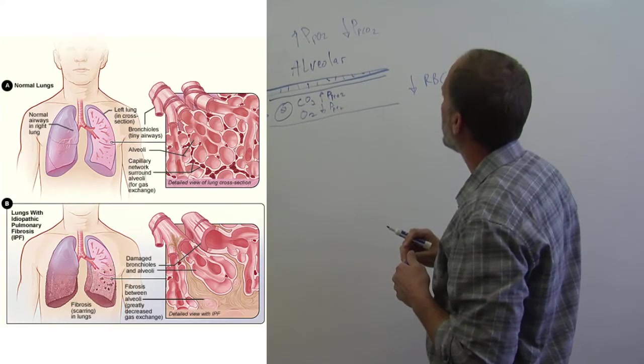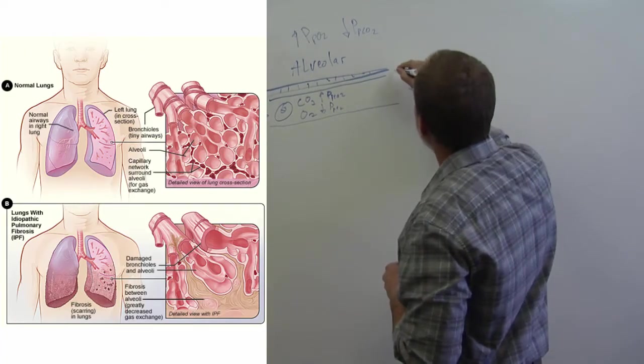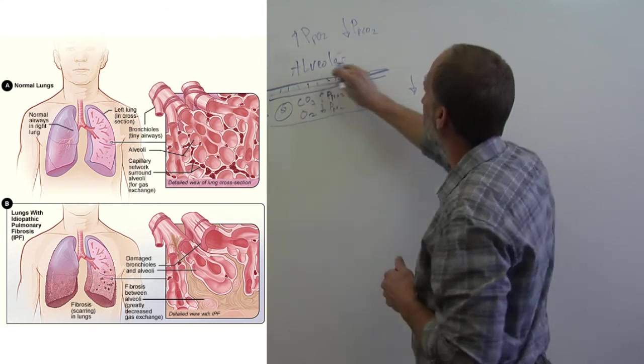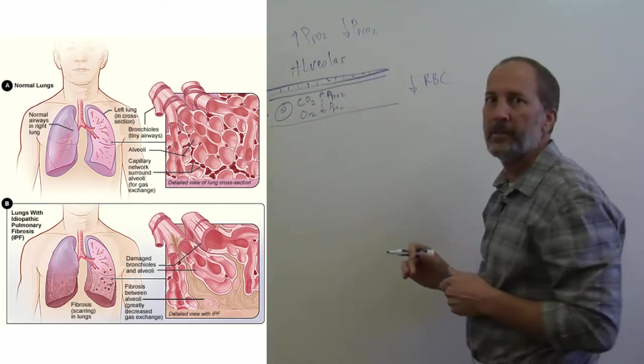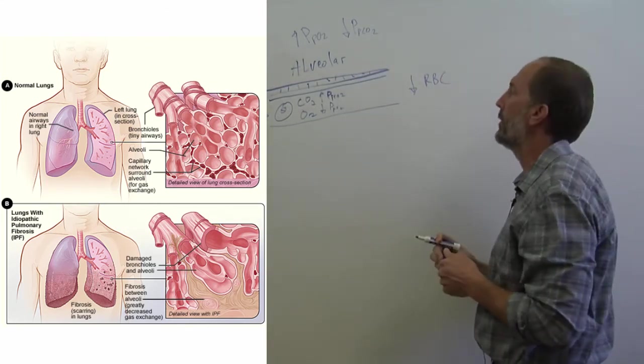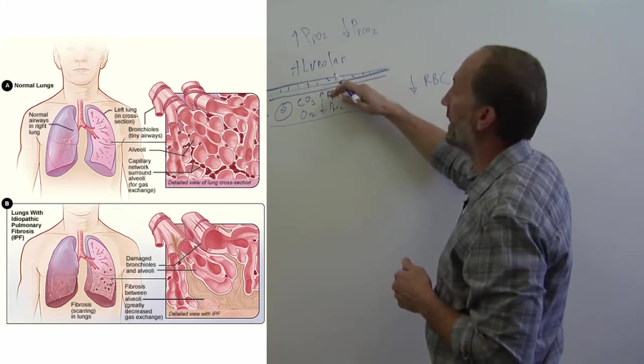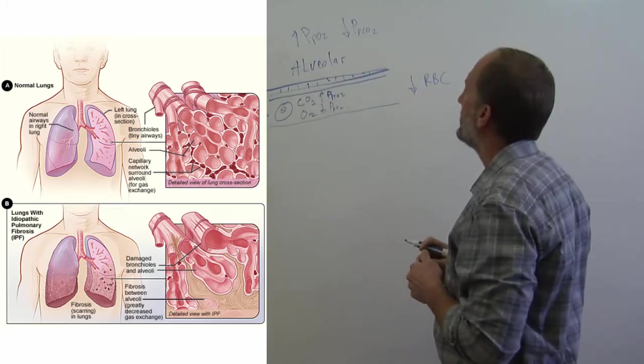Another thing that can happen is they can get what's called pulmonary fibrosis, where you have thickening of this membrane. When this membrane is thickened, the ability to diffuse across that membrane is reduced. And so they have a hard time getting oxygen in or CO2 eliminated.